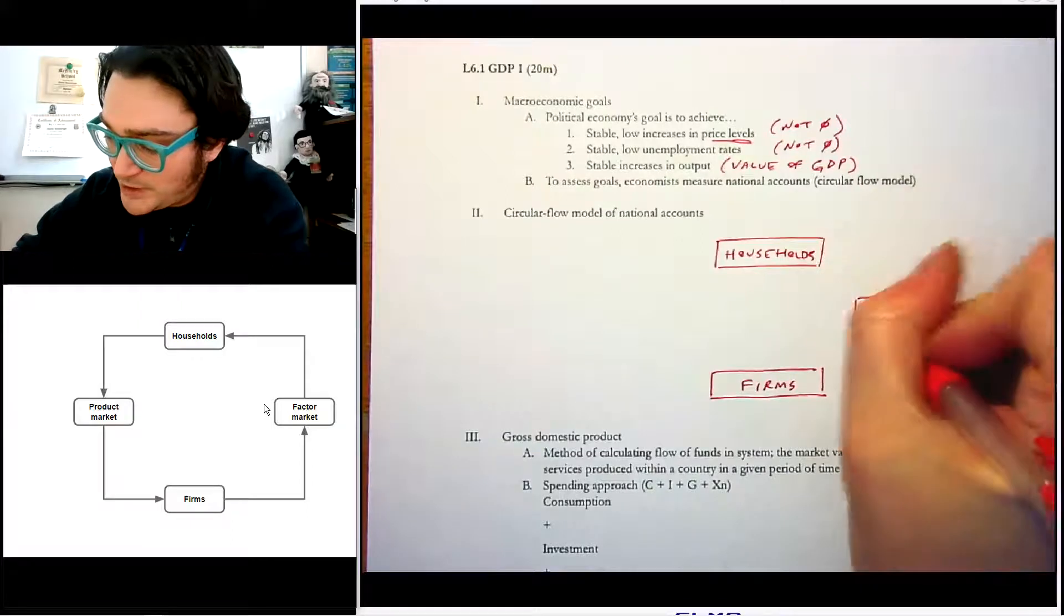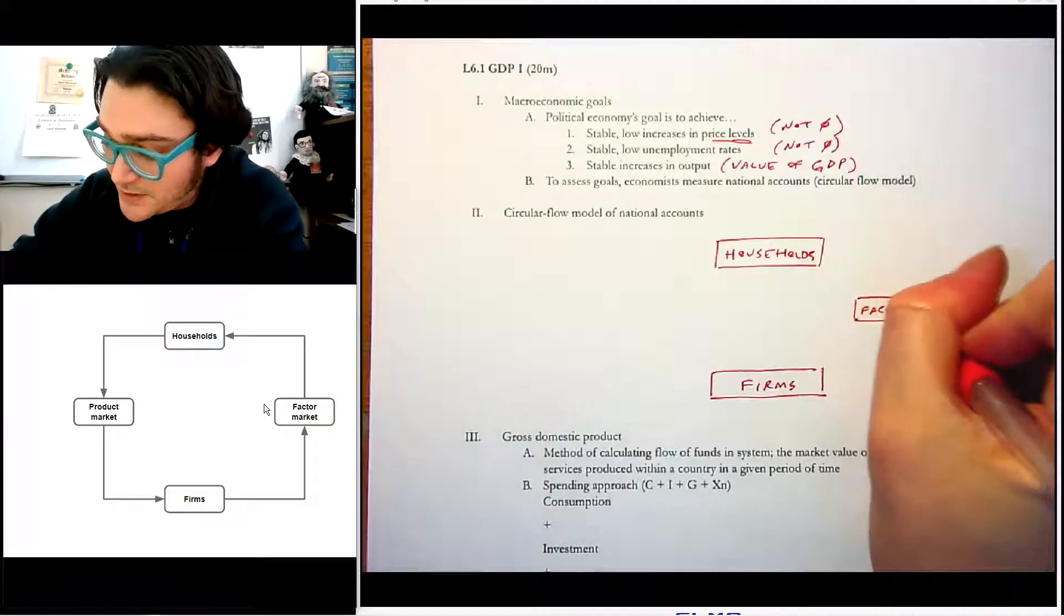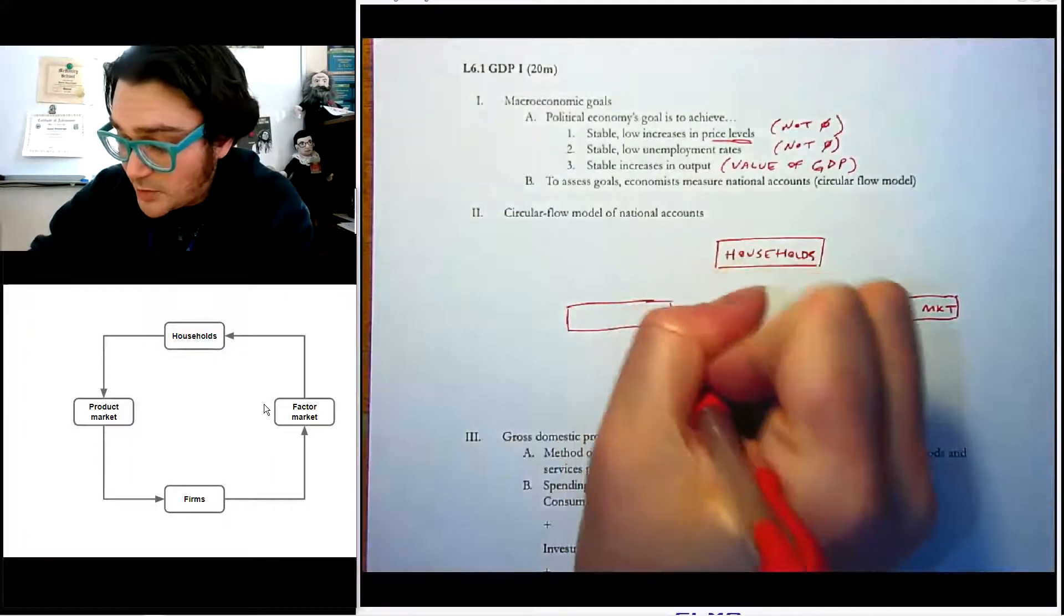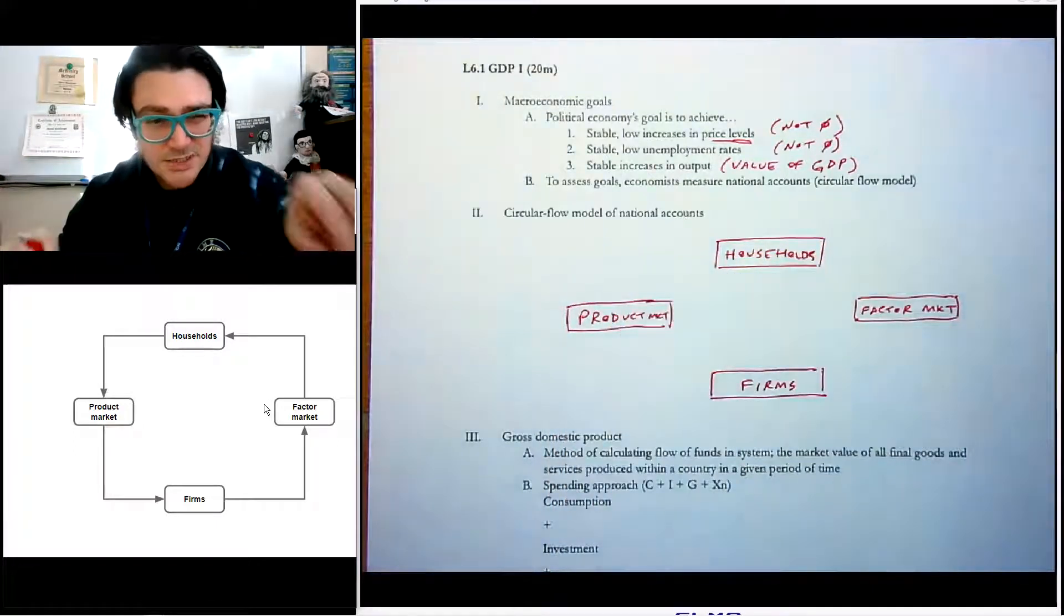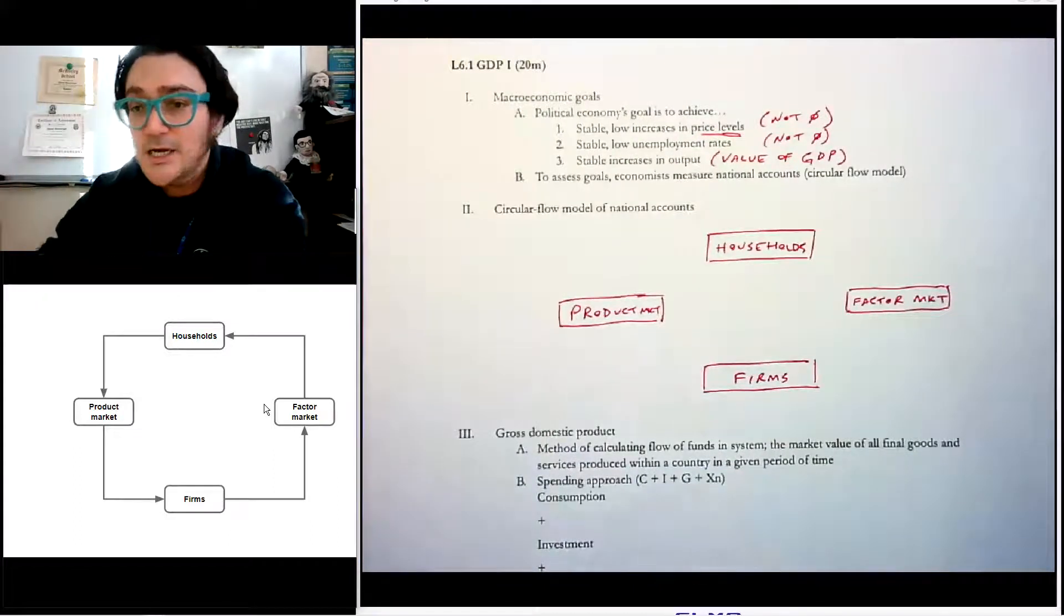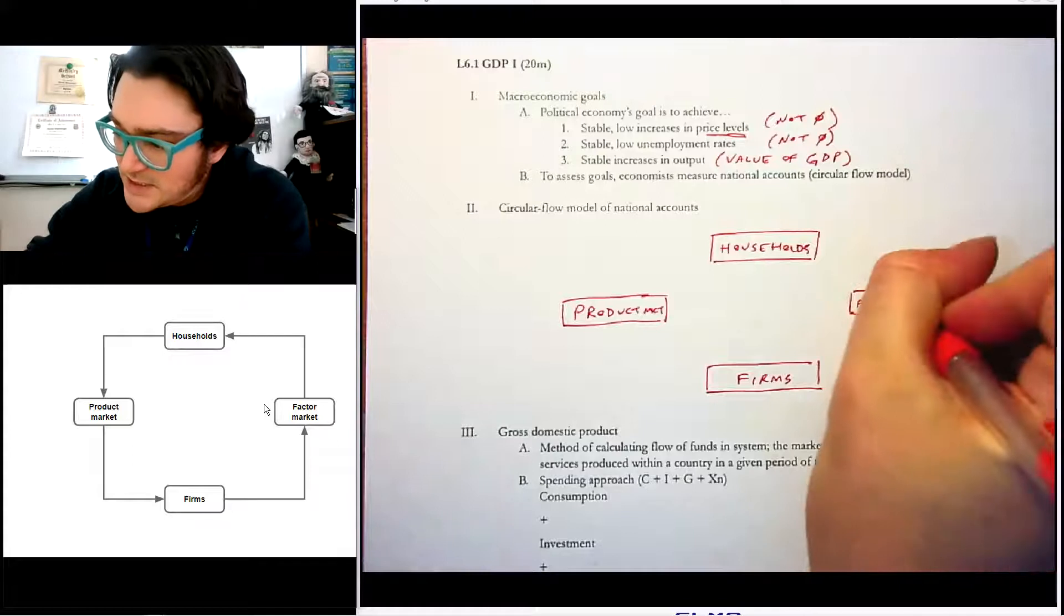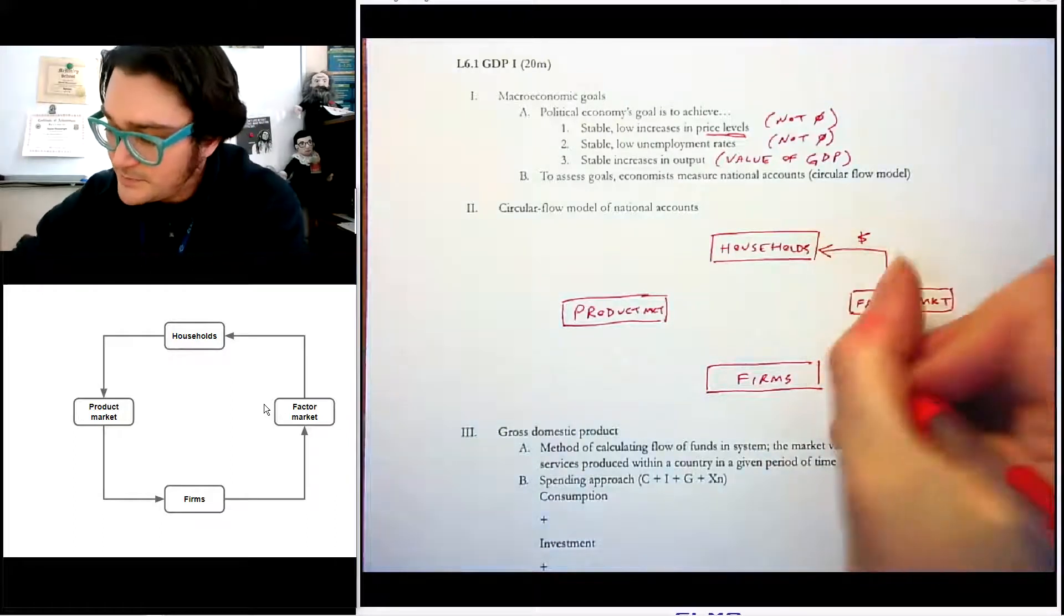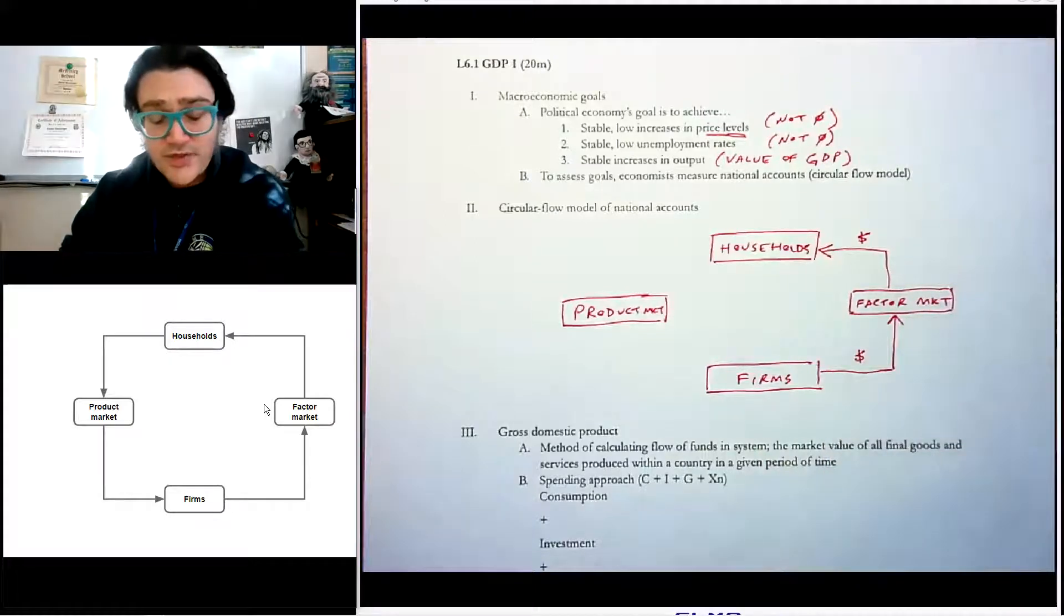And at the bottom, we're going to say that there are firms. Now we know that firms are really just made up of people as well. But for our purposes, we'll say that they kind of behave as a separate actor in this crazy model of our whole economy. And then we've got two markets. We actually learned about these two markets last semester. We have the factor market, which is what we learned in the very last unit of last semester. And we have the product market.